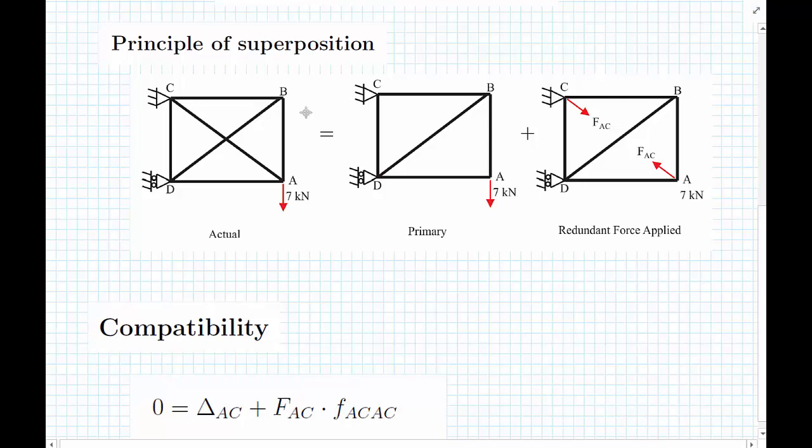We have the original structure here on the left hand side, what I've called the actual structure, and we can split this into two statically determinate structures. If I remove the member AC, I can have a statically determinate structure which I've called the primary structure, and this is fully statically determinate.